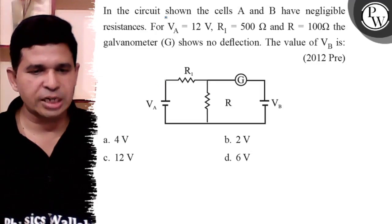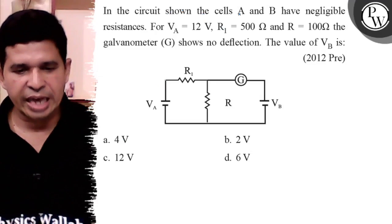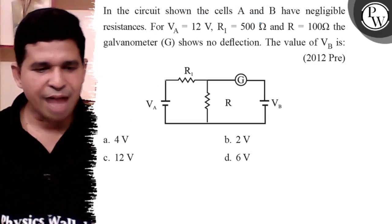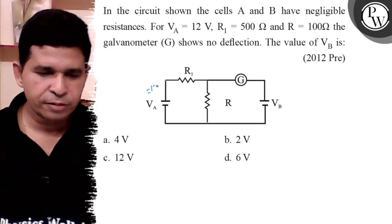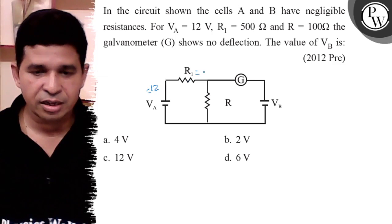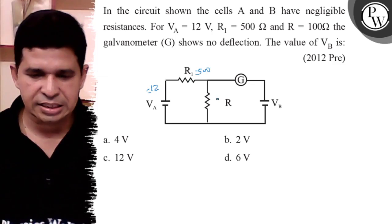Hello Bachchan, let's see this question. In the circuit shown, cells A and B have negligible resistance. Voltage VA = 12V and resistance R1 = 500 ohm are given, and R = 100Ω. We have to determine the voltage VB across the 100 ohm.